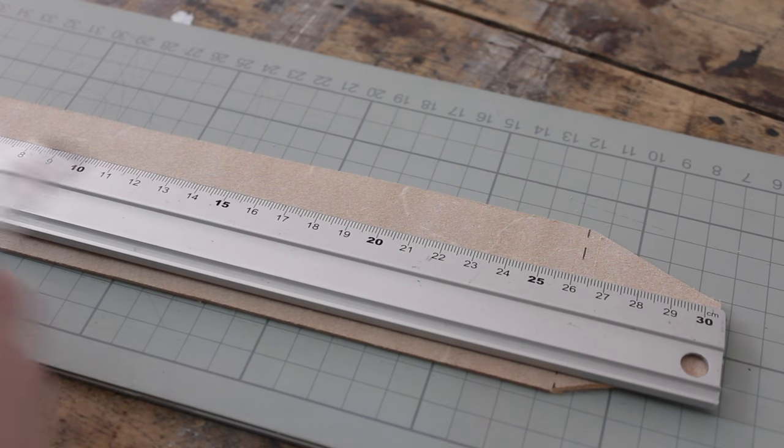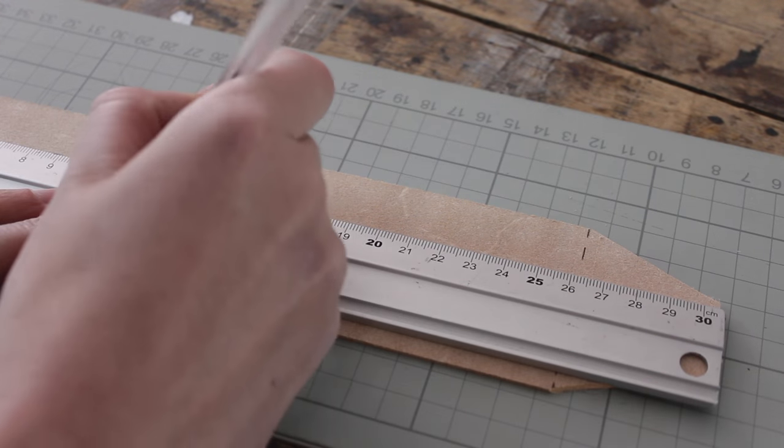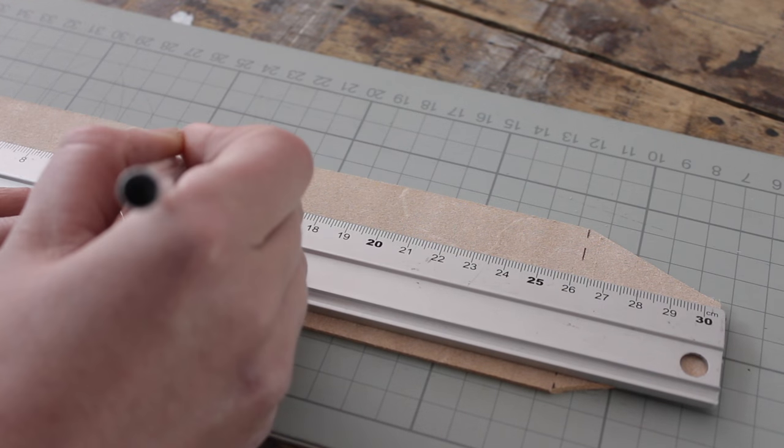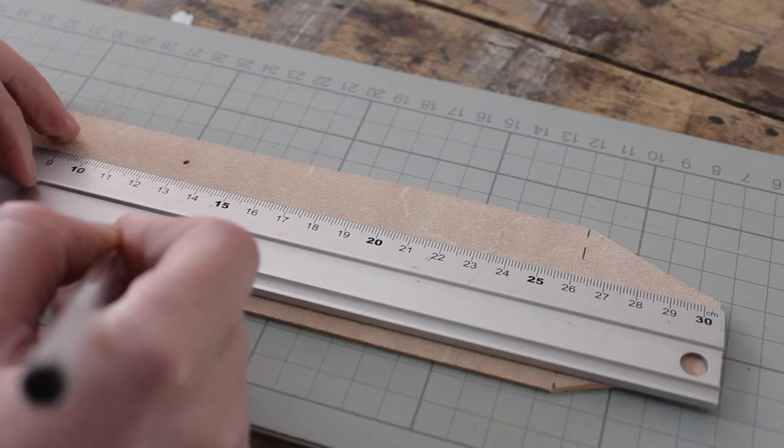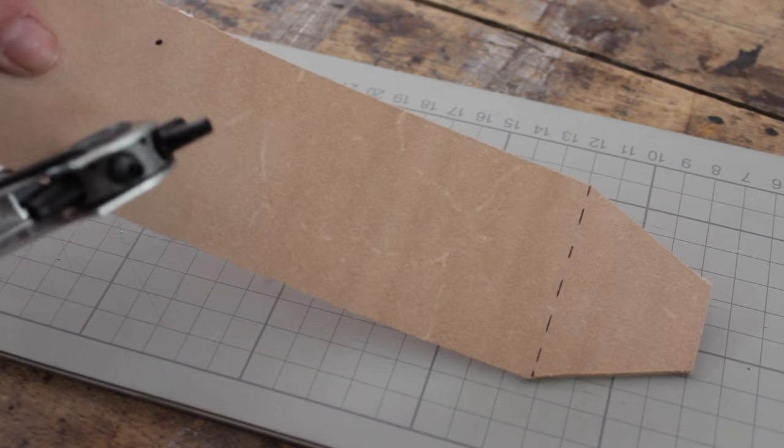Measure the middle of your sleeve without the overlap, so for me it's at 26 centimeters, and mark where your handle is gonna be. Use your hole punch to punch these holes out.